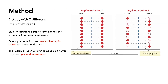We used a secondary data set — one study with two different implementations. The traditional one, implementation one, is where each person would get each 10 items of the scale. For implementation two, we randomly split the scale so that someone would have data for a randomized half.